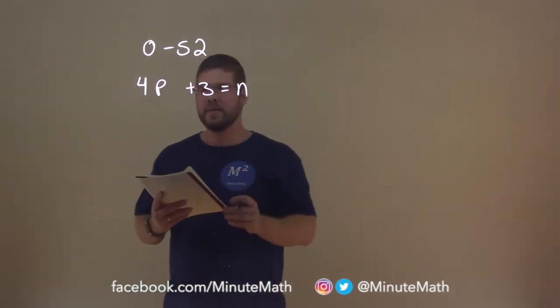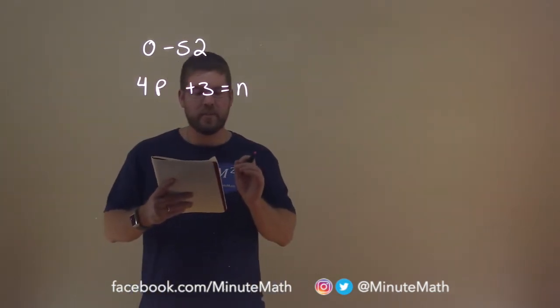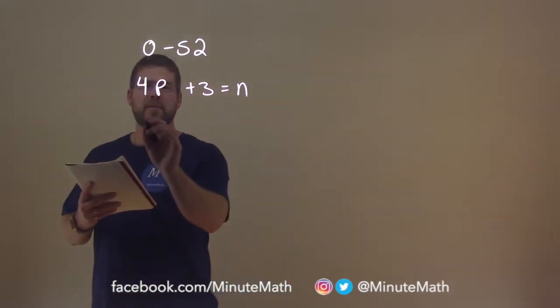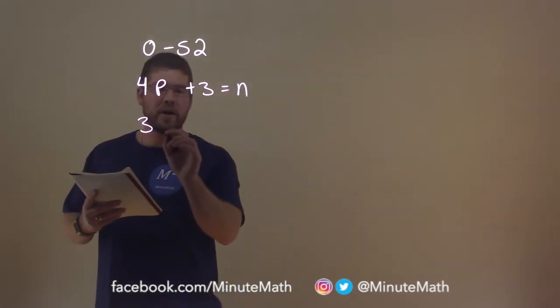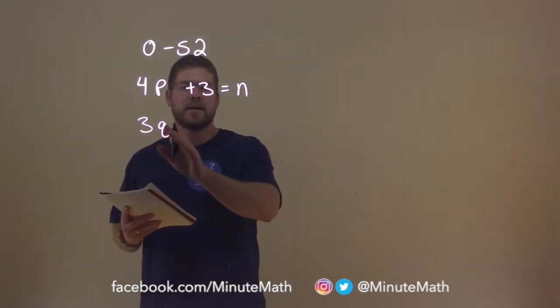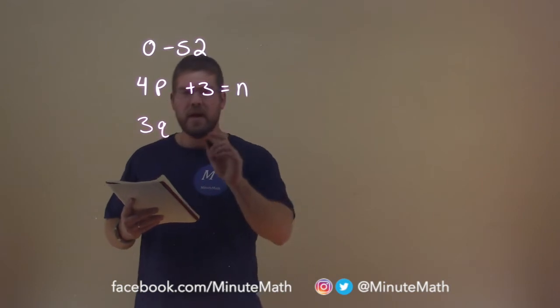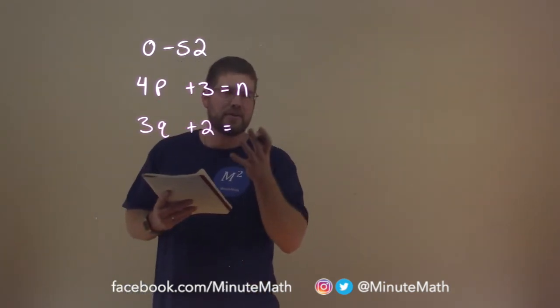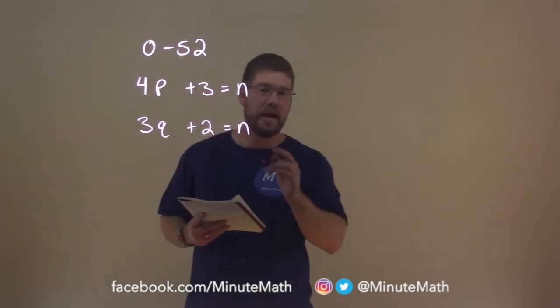The next one here says, if I deal among three people, two cards remain. So if I deal among three people, we have a new variable here, let's call it Q. Three people times how many times we deal around, two cards remain. But we still have that final answer that we're looking for, which is n.